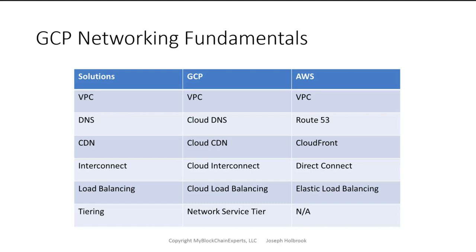When we talk about some terminology around networking, most of these terms you've probably already heard of. A virtual private cloud in Google is somewhat familiar to what you're already doing in AWS, but there are differences in how it's deployed and managed. In Google, the VPC network is broader than what AWS does — it's really a global resource that spans all the regions in that project, deployed with software-defined networking that Google also uses for their own enterprise services internally.